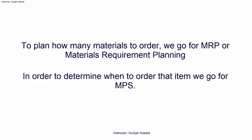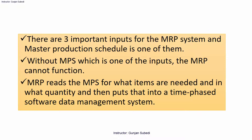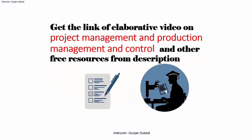To plan how many materials to order, we go for MRP — materials requirement planning. To determine when to order an item, we go for the MPS. There are three important inputs for the MRP system: master production schedule is one of them; the other two are inventory status records and product structure records. Without MPS, the MRP cannot function. MRP reads the MPS for what items are needed and in what quantity, then puts that into a time-phase software data management system.